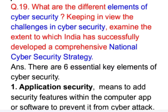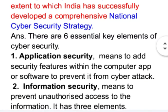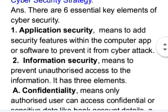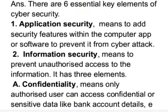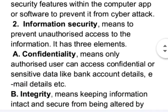There are six essential key elements of cybersecurity. First is application security, which means to add security features within the computer app or software to prevent it from cyber attack. Next is information security, which means to prevent unauthorized access to the information. It has three elements: confidentiality, integrity, and availability.